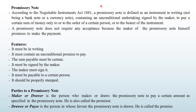In a promissory note there are two parties. The maker, who is the creator or debtor who makes the promise to pay, and the payee, to whom the payment is promised.